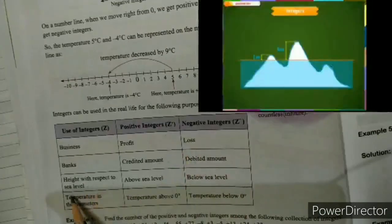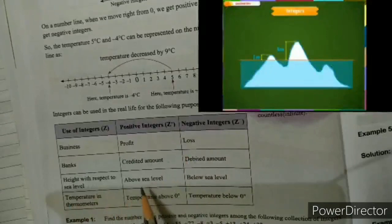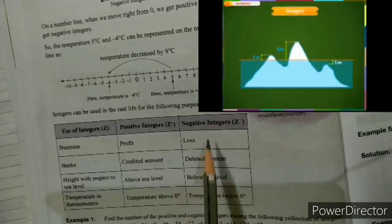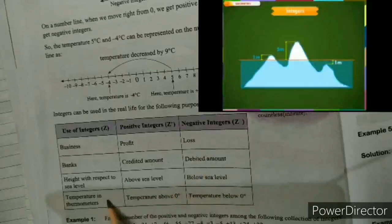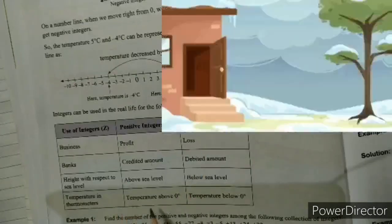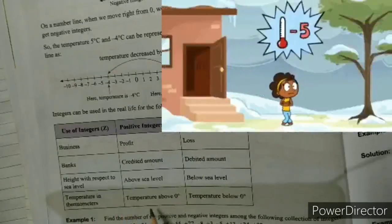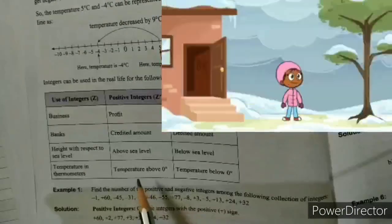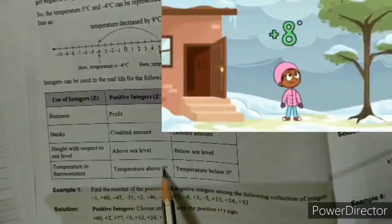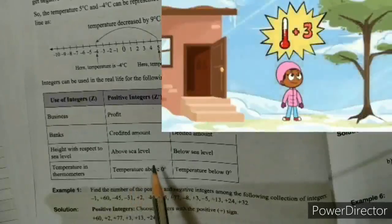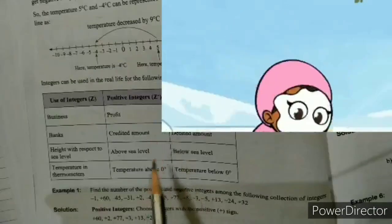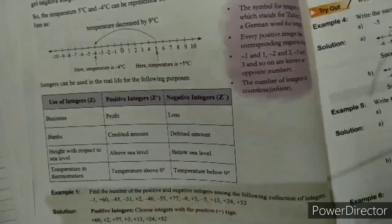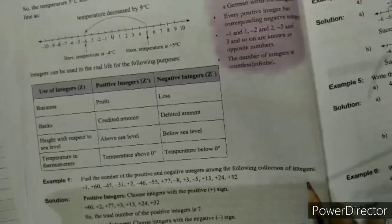For height with respect to sea level — if you go above sea level it is a positive integer, and if you go below sea level it is a negative integer. On a thermometer, temperature above 0 degrees is a positive integer and temperature below 0 degrees is a negative integer.